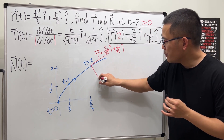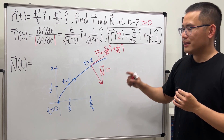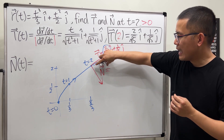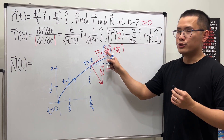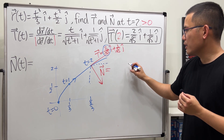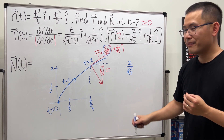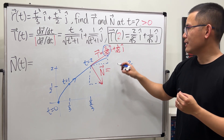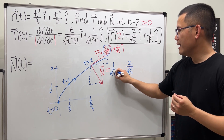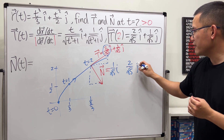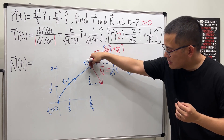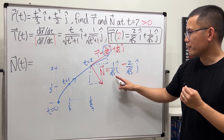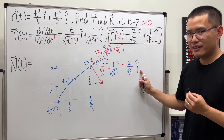So N is going to point in that direction. To create something perpendicular, just switch the components: what was 1 over square root of 5 in j becomes the i component, and 2 over square root of 5 in i becomes the j part. But notice the curve is concave downward here, so we negate the y component. Therefore N(2) = (1/√5)i − (2/√5)j.